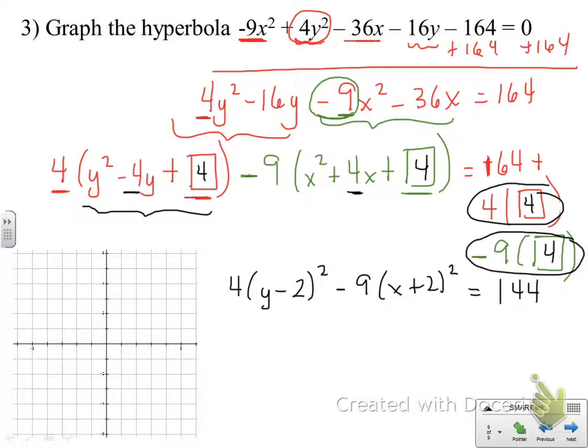Here's what we ended up with as our constant, 144. And remember that for a hyperbola, we want our equation to equal 1. Just like with the ellipses, we're going to divide every term by that constant that we got when we simplified. We'll divide everything by 144.